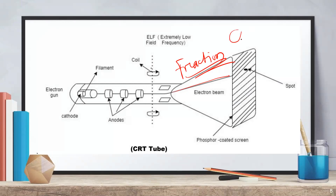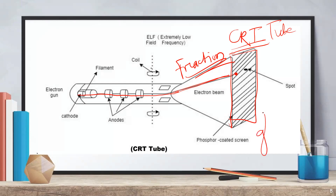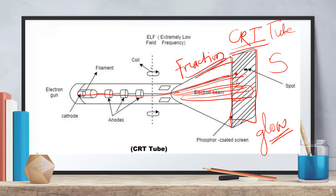A CRT monitor is mainly created with a CRT tube. Inside the tube, electrons hit the phosphor-coated screen. Wherever the electron touches the screen, light glows in that area, and as a result we can see a particular image on the screen. To generate the electron beam, the cathode and the anode, which are opposite to each other, are used.